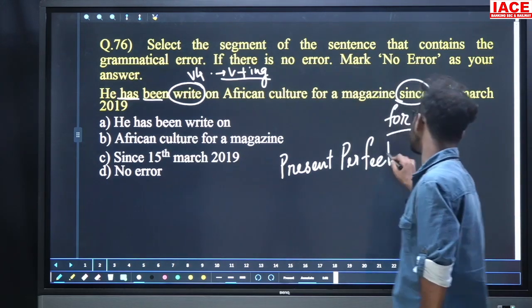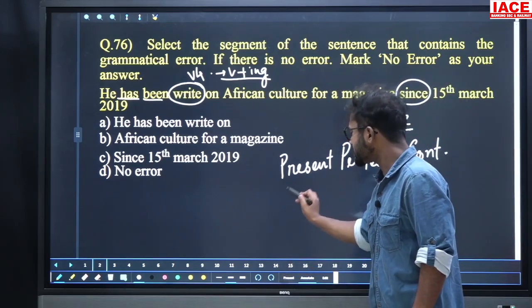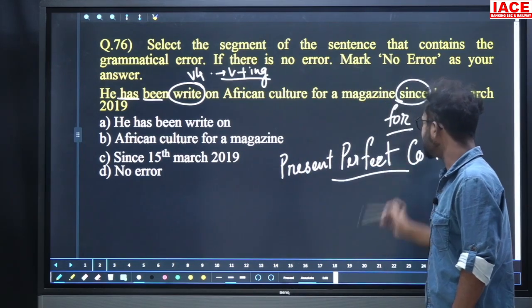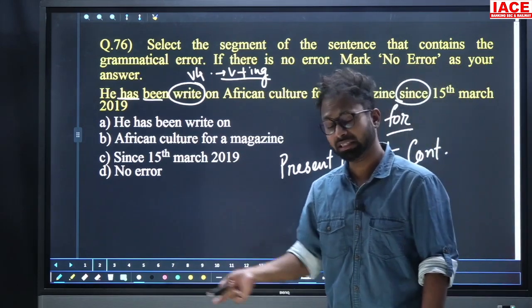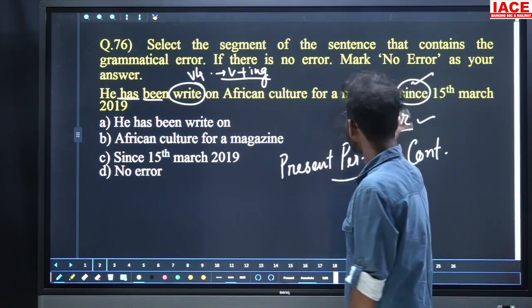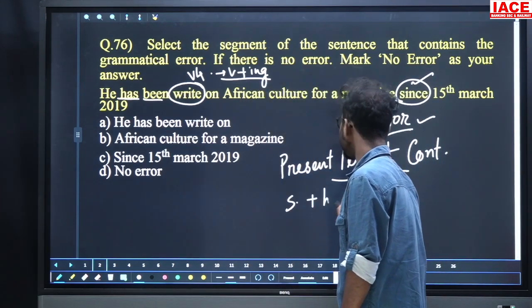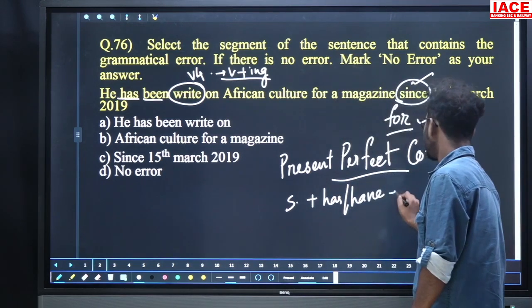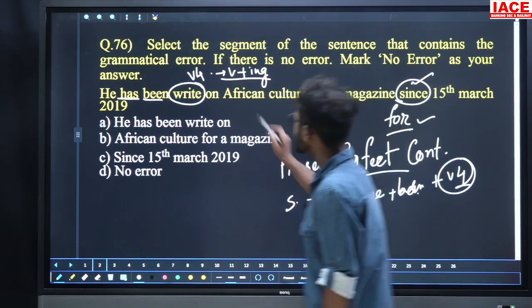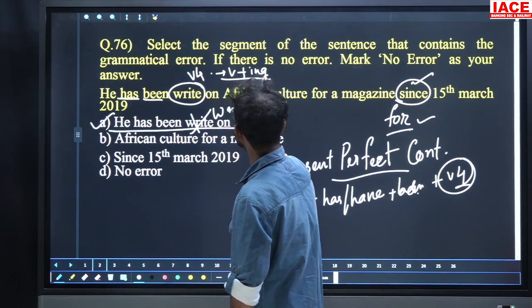Present perfect continuous tense has been used for any action that started in the past and is still continuing. At the end, either 'for' or 'since' will be there as the timing reference. The structure is: subject + has/have + been + V4. So it should be 'writing'. The problem is in part A — it should be 'He has been writing on'.